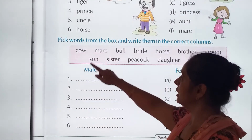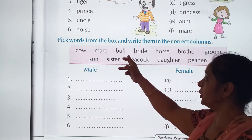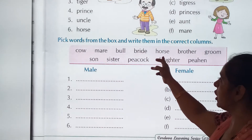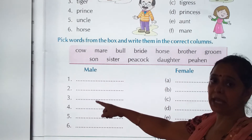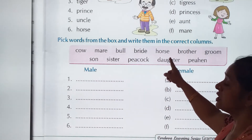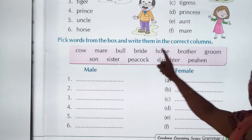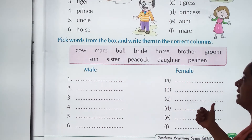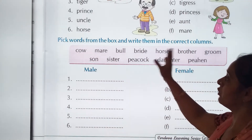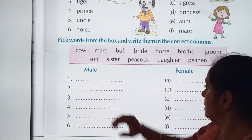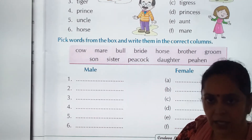Pick up the words: cow — female, man, bull, bride, horse — horse is a male. Peacock — male. Daughter is a female. Son is a male. Brother is a male. Sister is a female. Cow is a female, bull is a male. You have to pick out the words from the box and write them in the correct column.